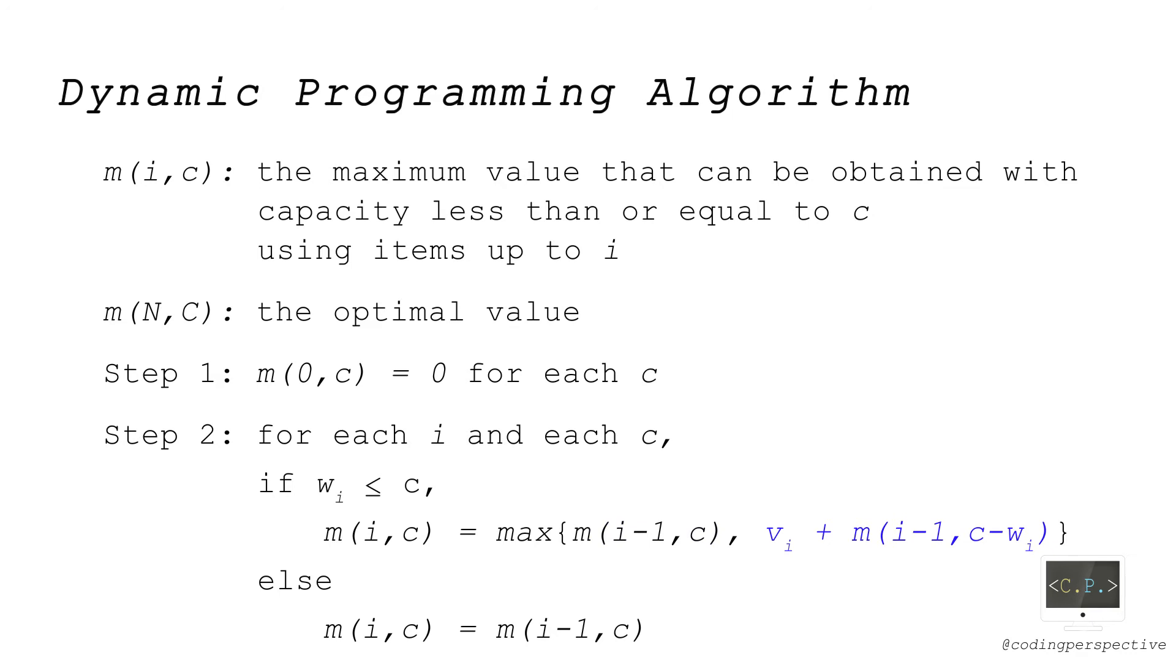If we include item i, then we gain v_i, but we need w_i weight in return. So the best we can do with the remaining items up to i-1 and capacity c minus w_i is m(i-1, c-w_i).